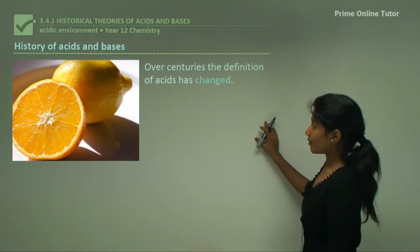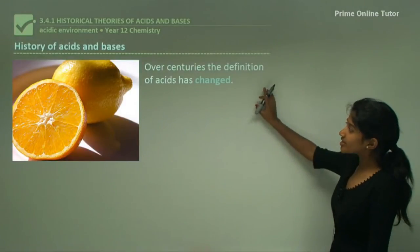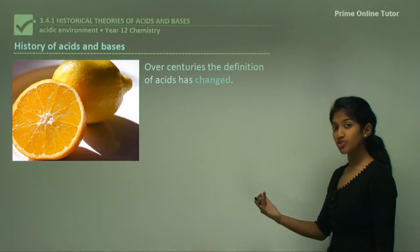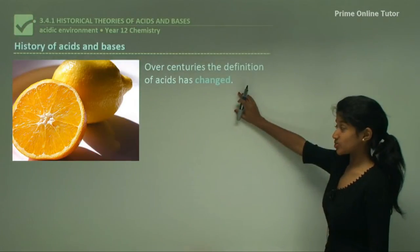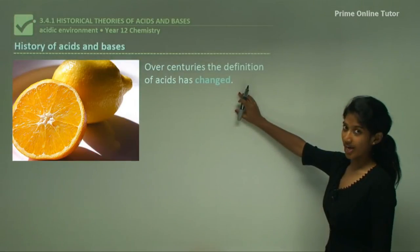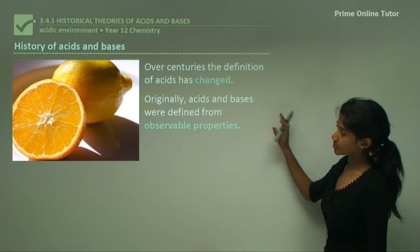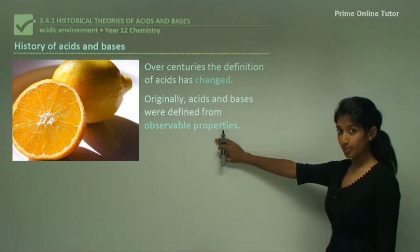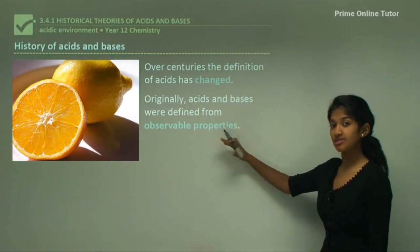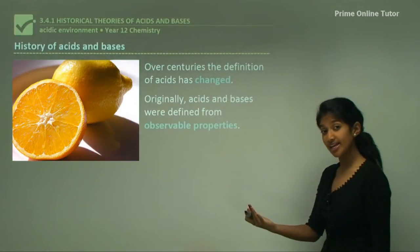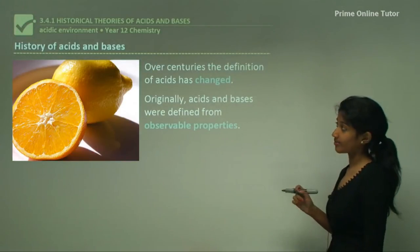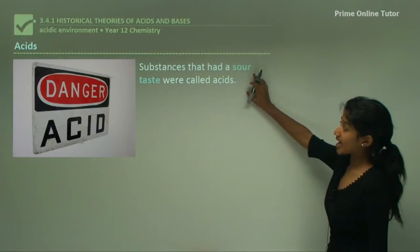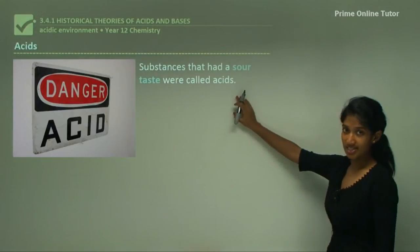Over centuries, the definition of acids has changed. Firstly, acids were defined by their observable properties, such as physical properties like taste and appearance. Substances that had a sour taste were called acids.